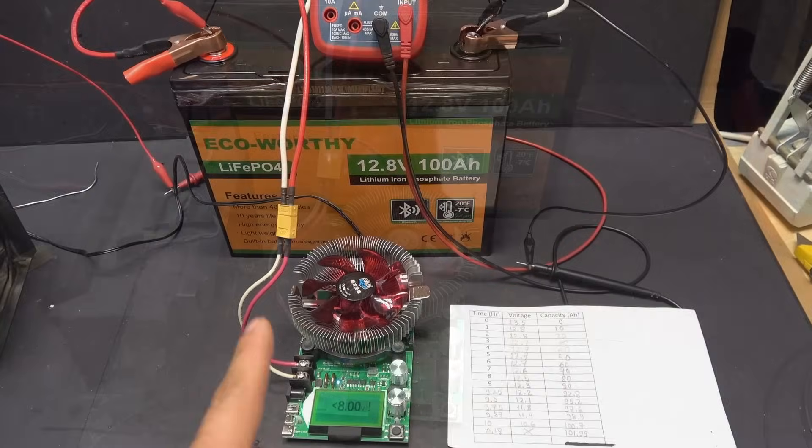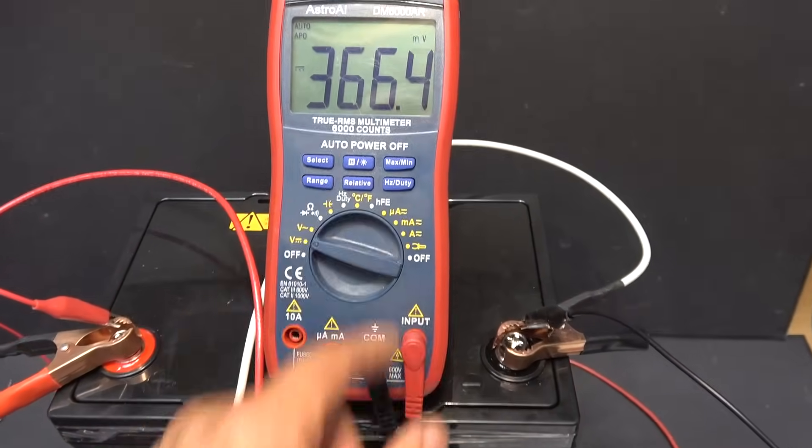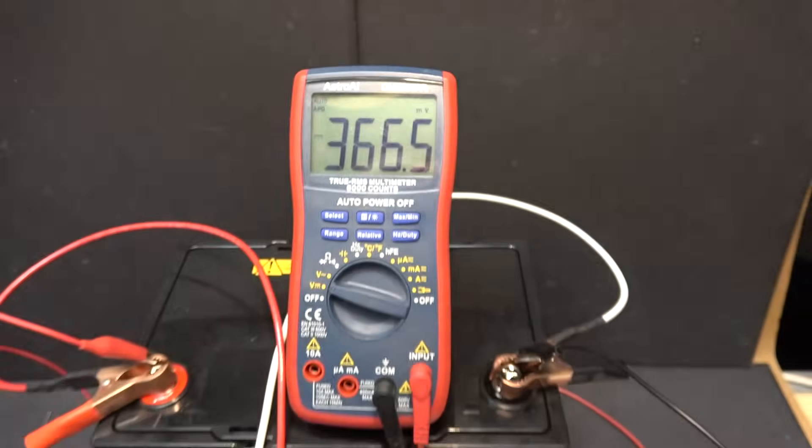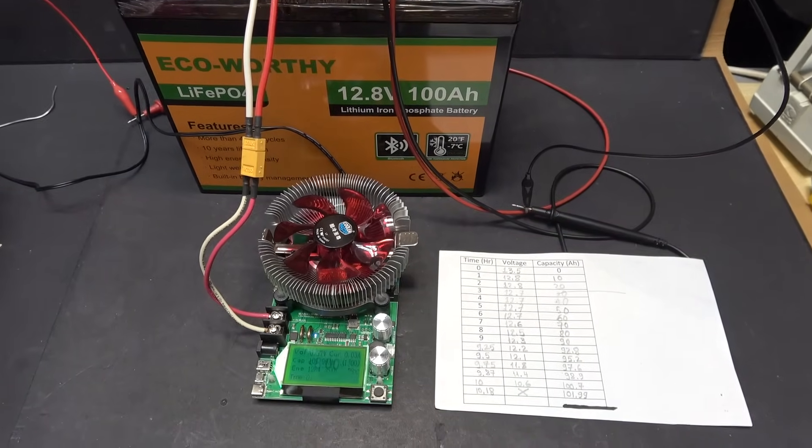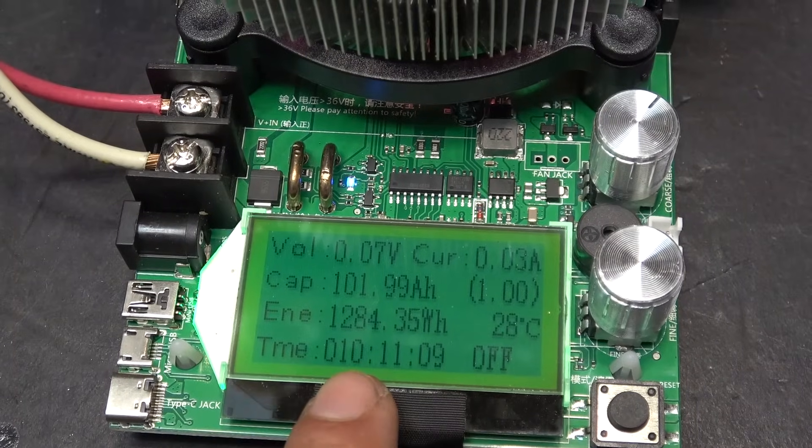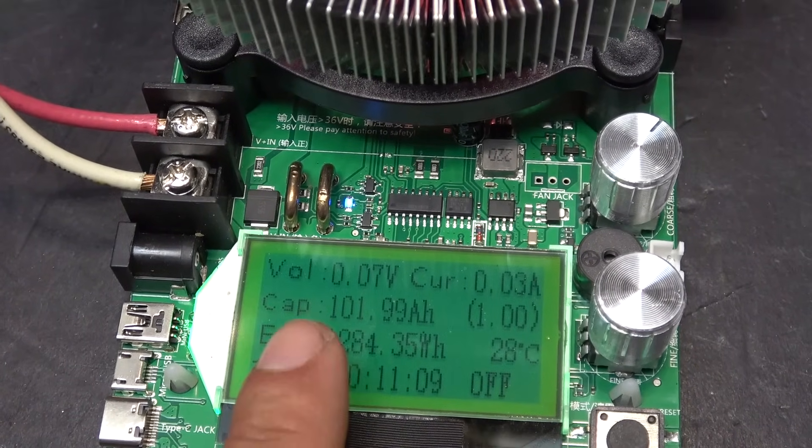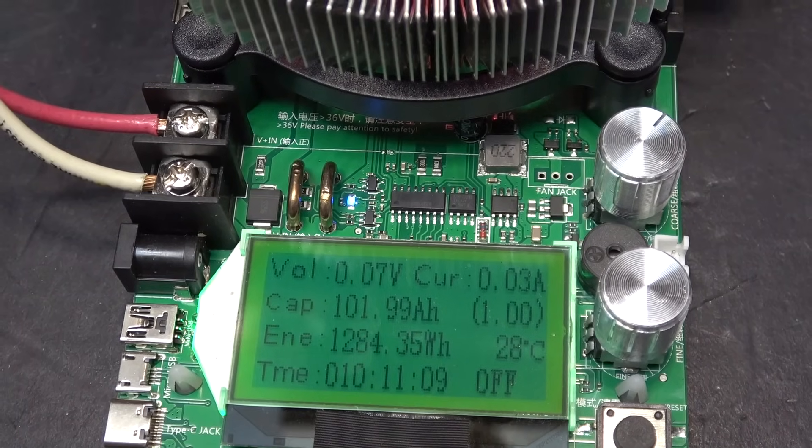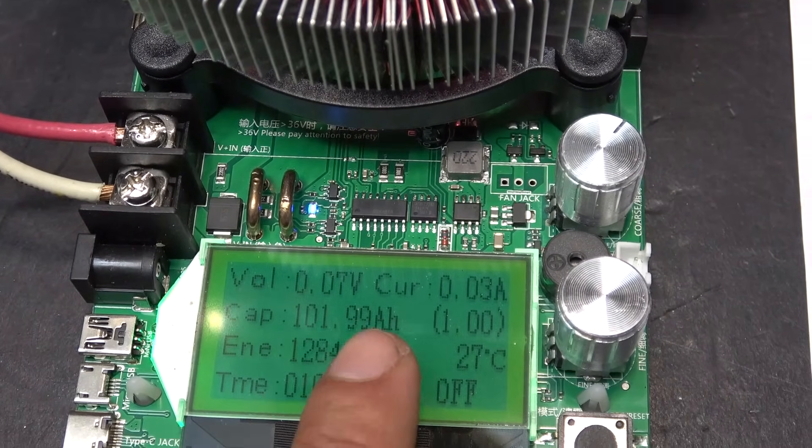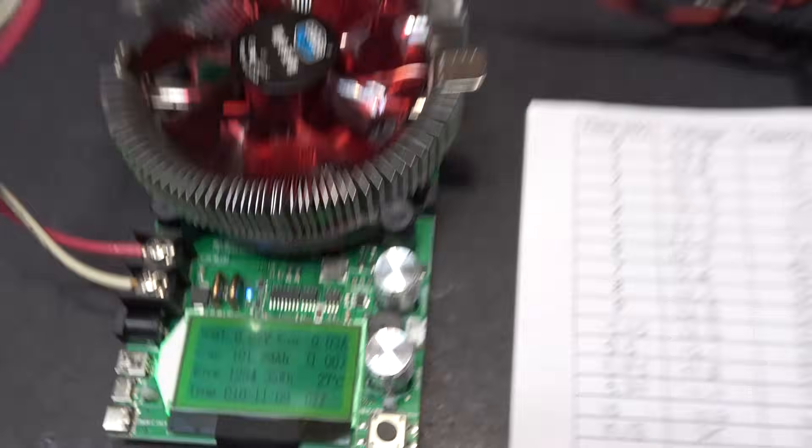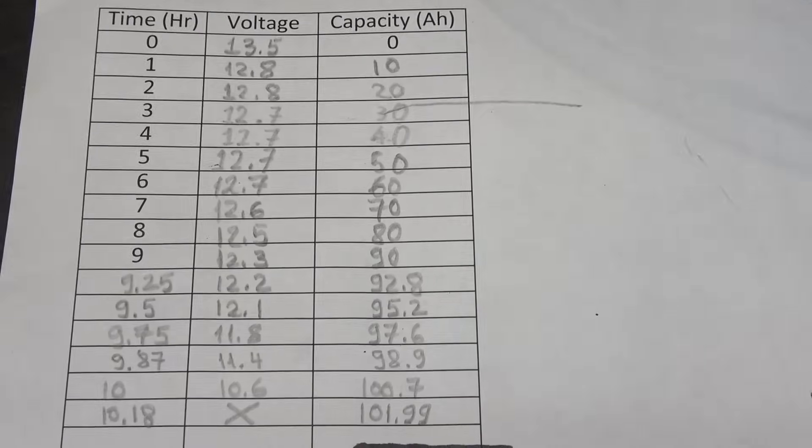The BMS just shut down. Battery voltage 3.66 volts and the tester just stopped. Let's see what we got. Time past 10 hours 11 minutes. Capacity 101.99 amp hours. Almost 102 amp hours. Over 100 amp hours. And these are the data I have recorded.